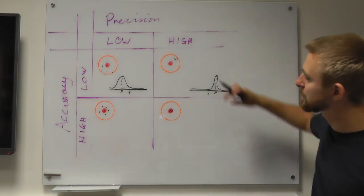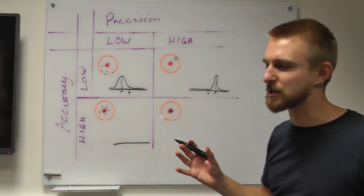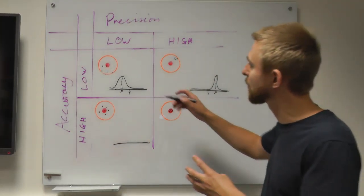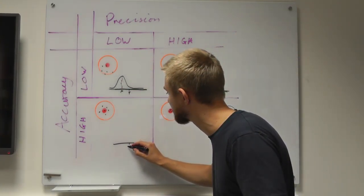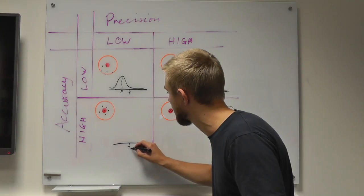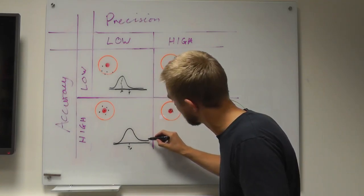So you see the difference between these two? Very narrow distribution, that's the difference. Next, high accuracy, low precision. So now, we've got another wide distribution, but this time, the target and the mean are aligned.